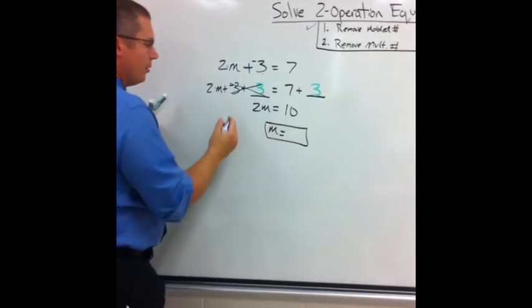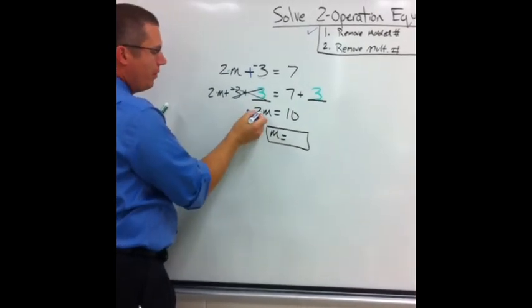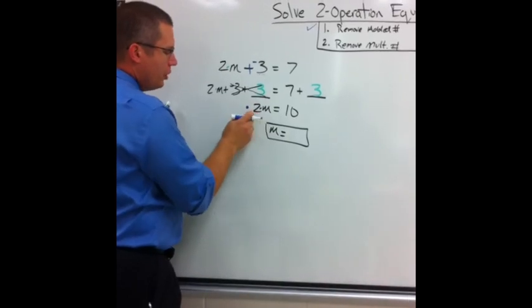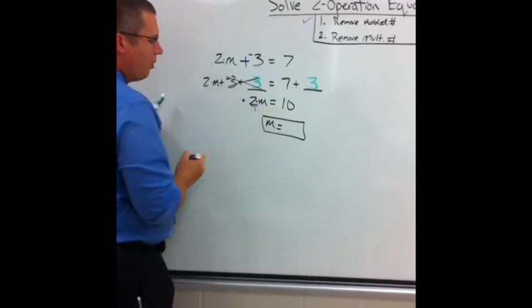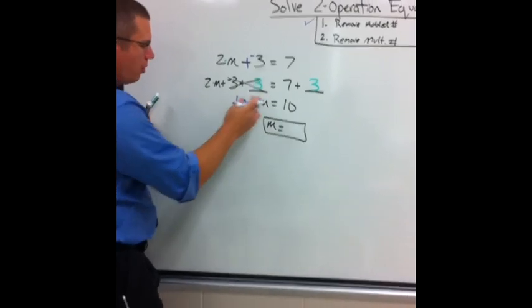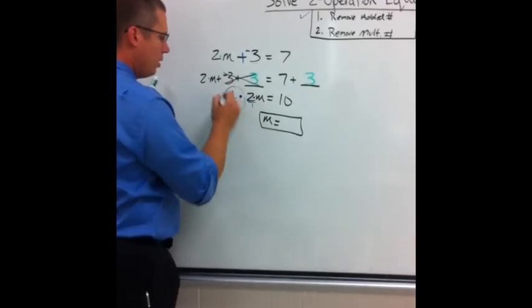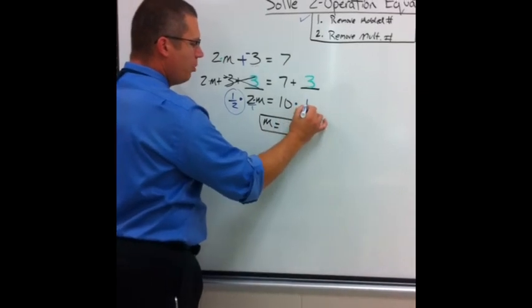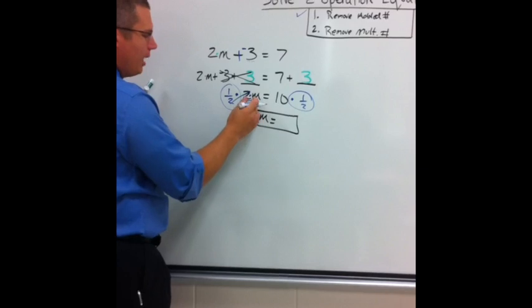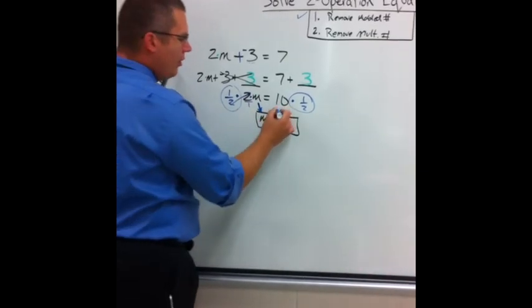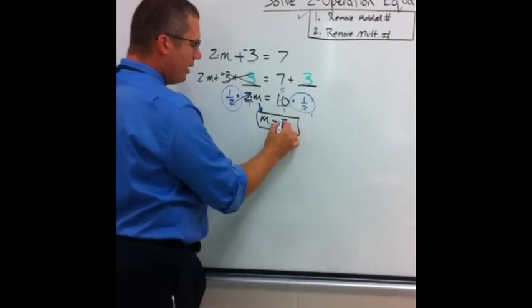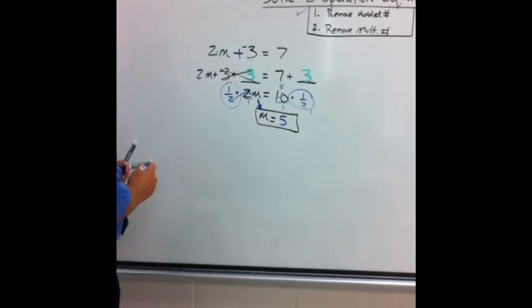Remove the multiplied number. Remember, I need to get rid of the multiplied number by multiplying the reciprocal. 2 as a fraction is 2 over 1. The reciprocal of 2 over 1 is 1 over 2. If I do it to one side, I must do it to the other times 1 over 2. 2s cancel out. I'm left with m all by itself. On this side, I can reduce. 2 is a 1, this is a 5. So I end up with n equal 5 as my final.